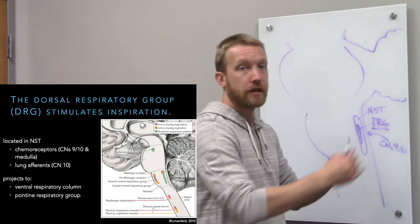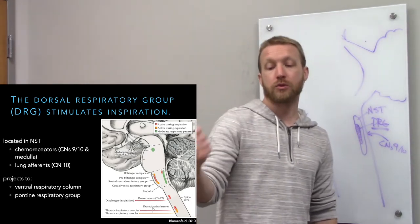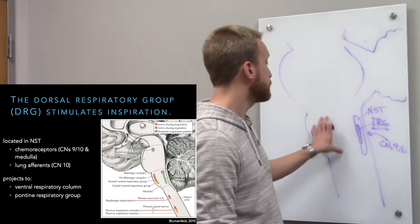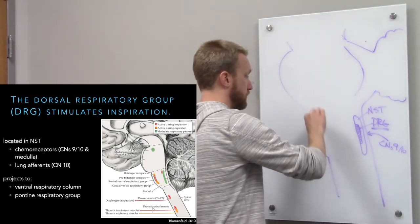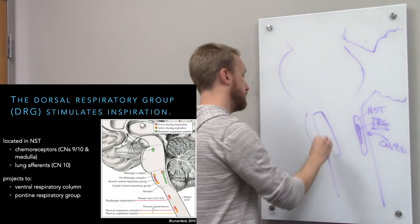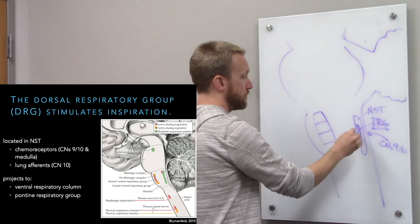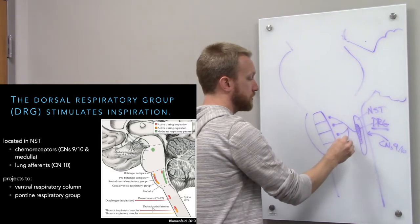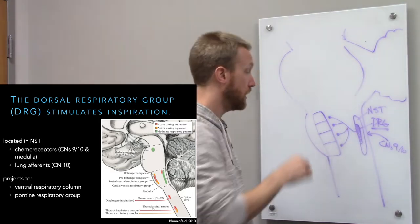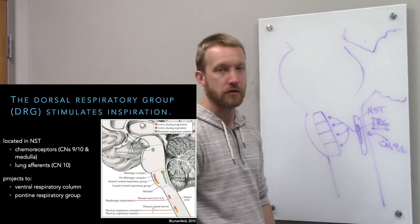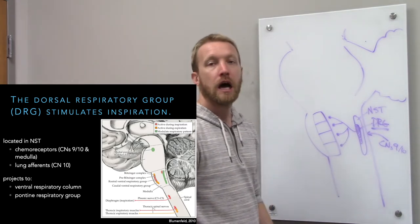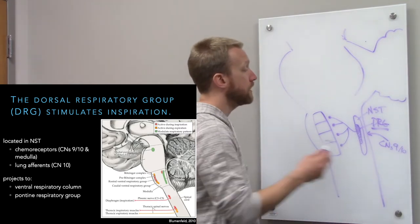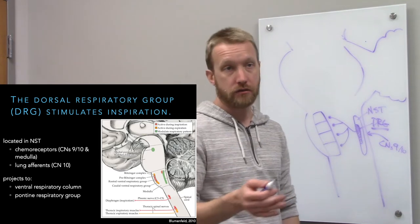From the dorsal respiratory group, we project with both excitatory and inhibitory signals to several targets. One target is the ventral respiratory column, which has several components. Based on what's going on in the dorsal respiratory group, we'll either excite or inhibit different parts of it.